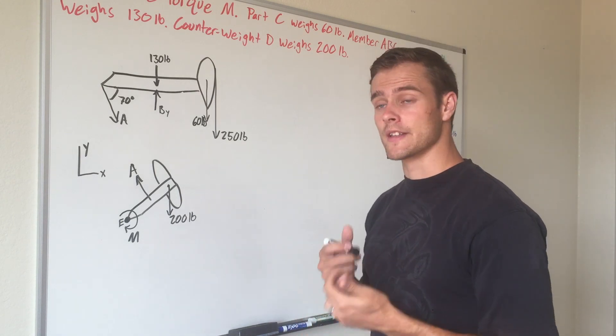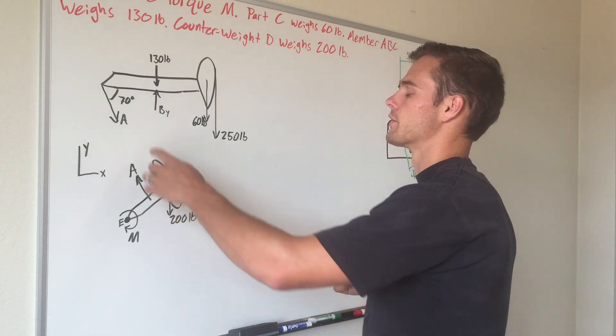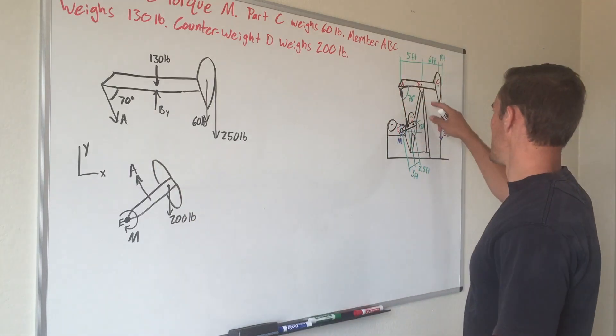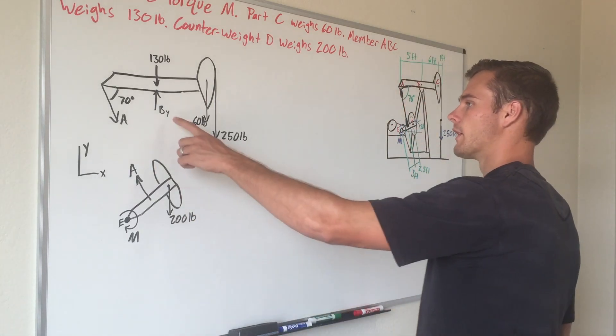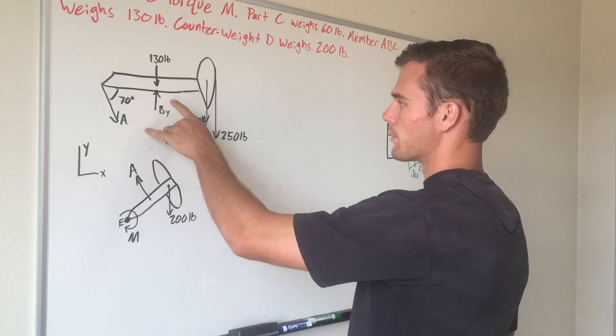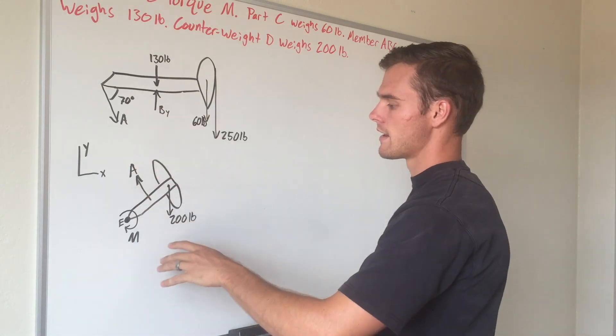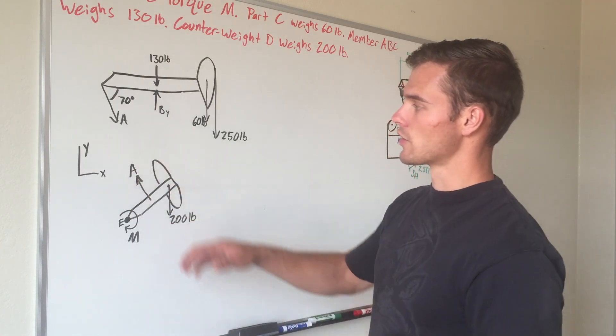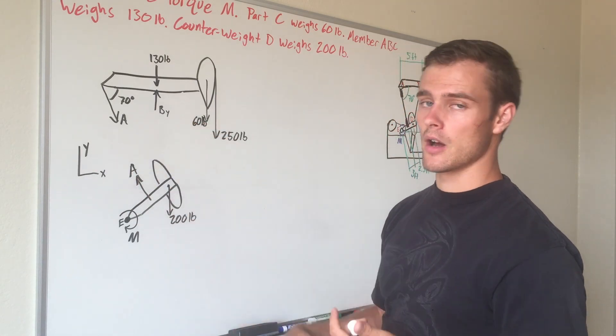We've drawn those as external forces and we've drawn the reaction force at point B supporting this whole member. Then we have our force A. It's a two-force member, so we've drawn it in equal magnitude and opposite direction.